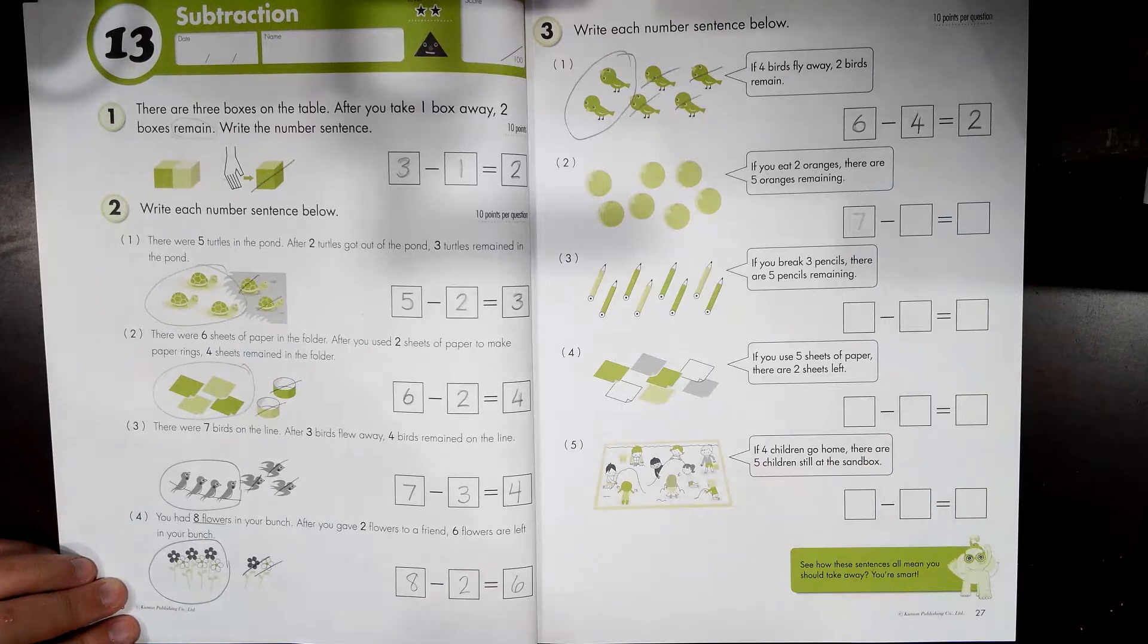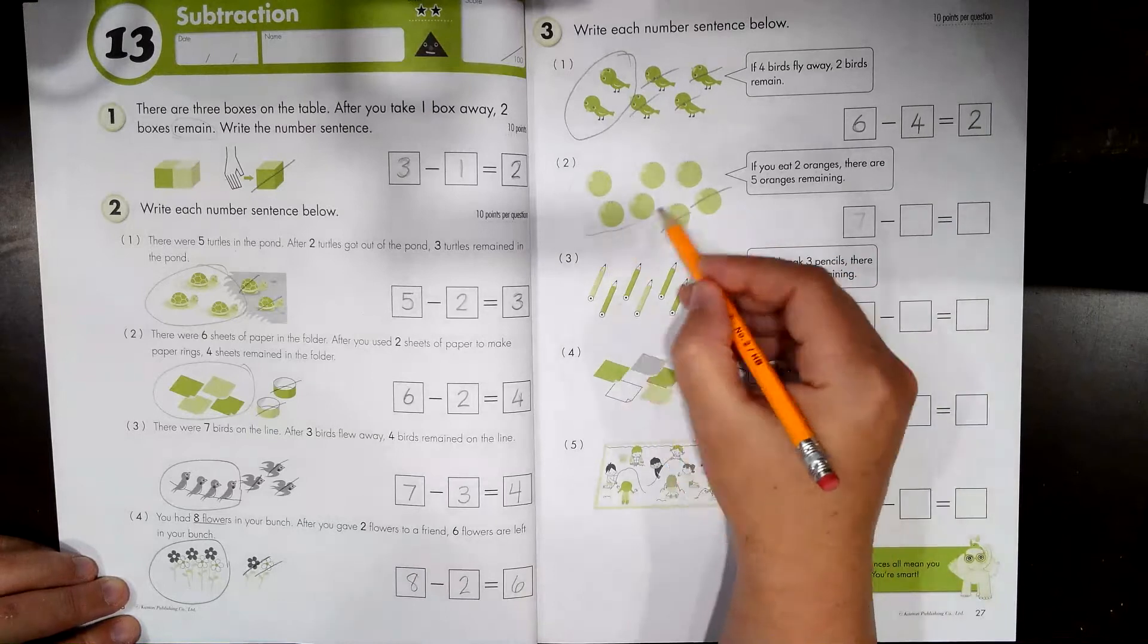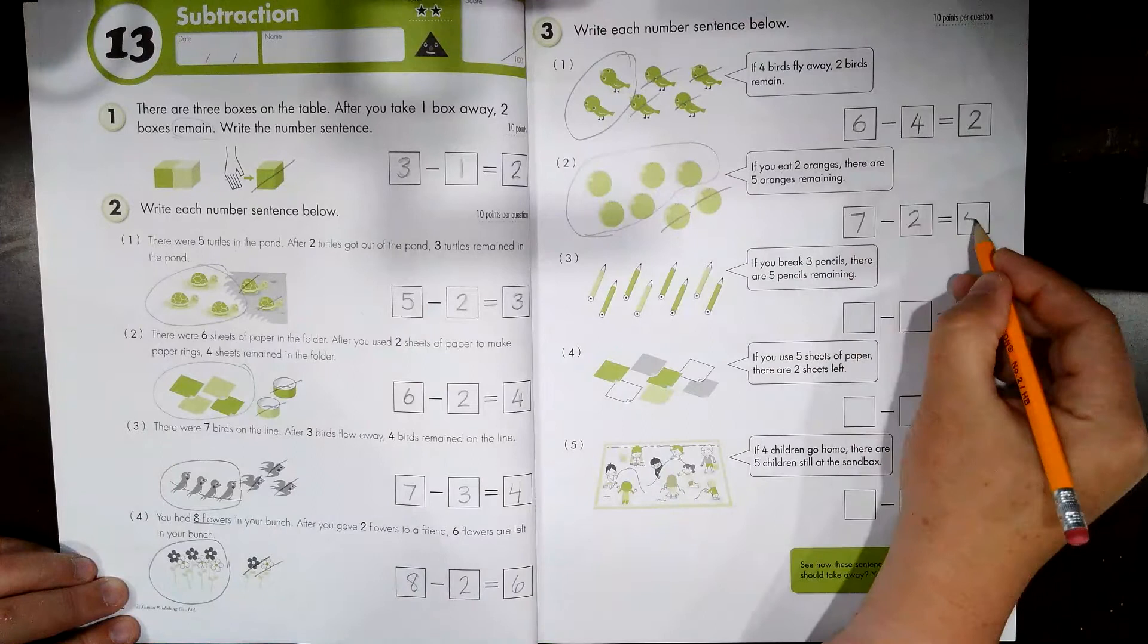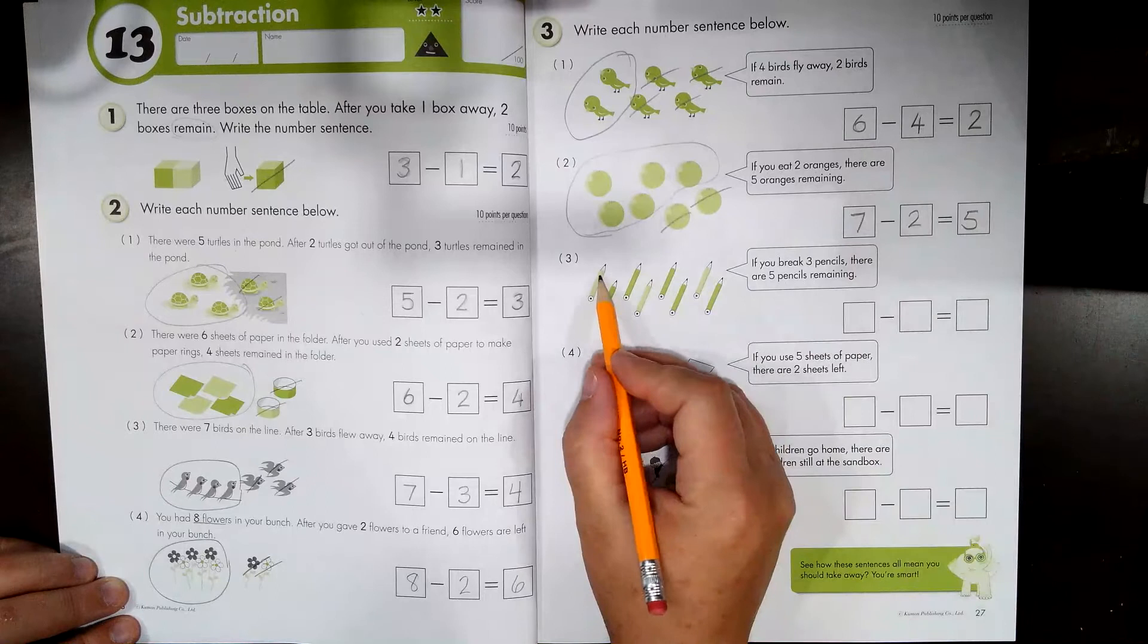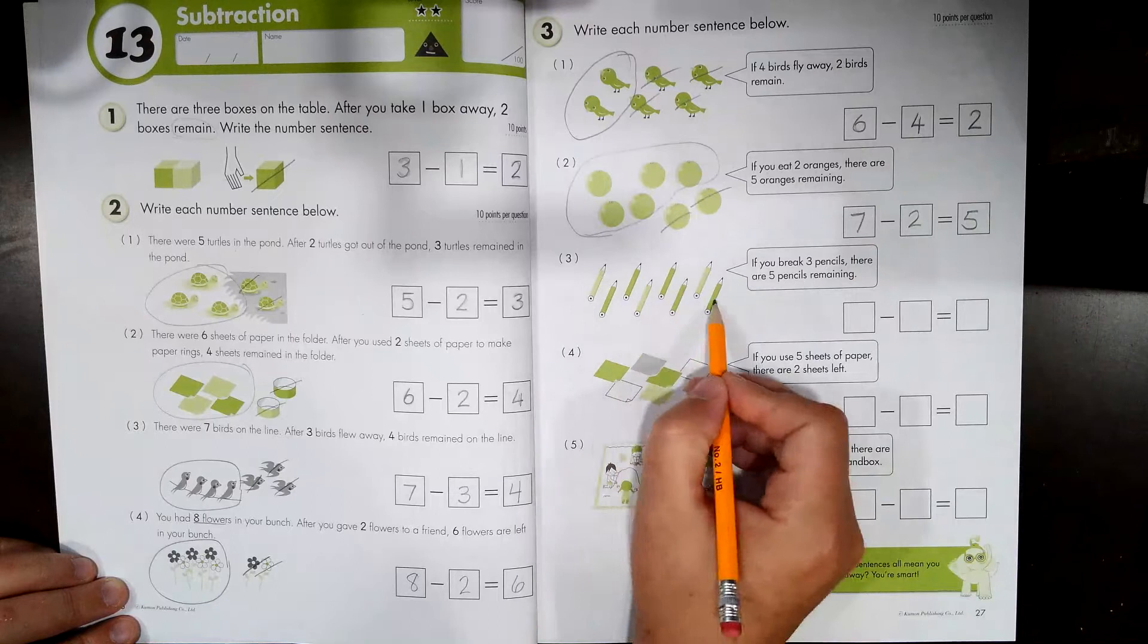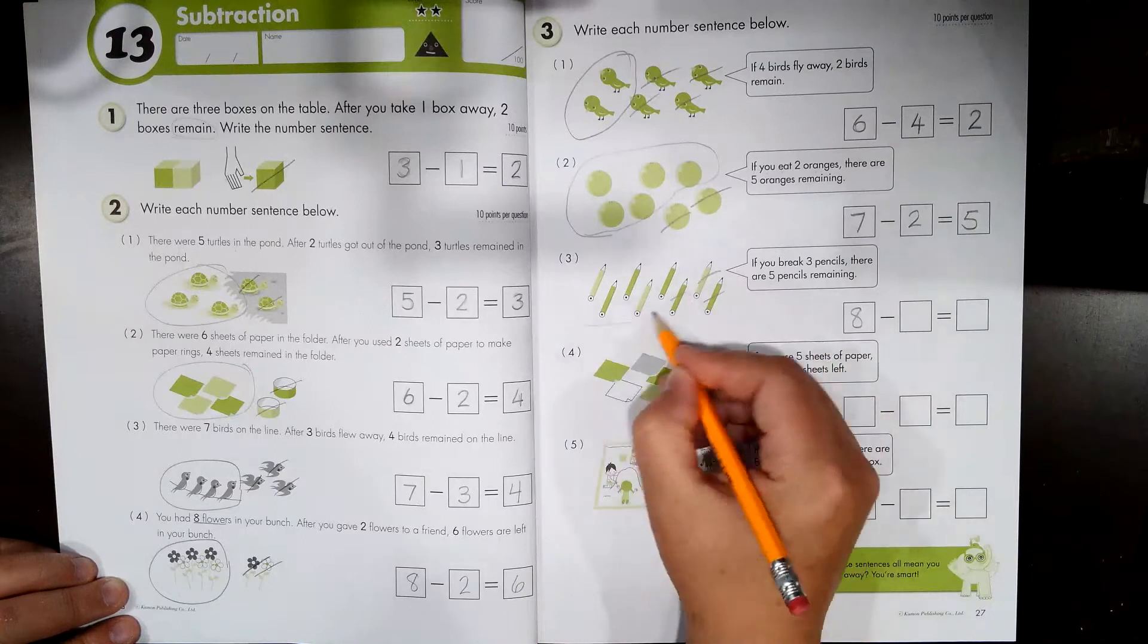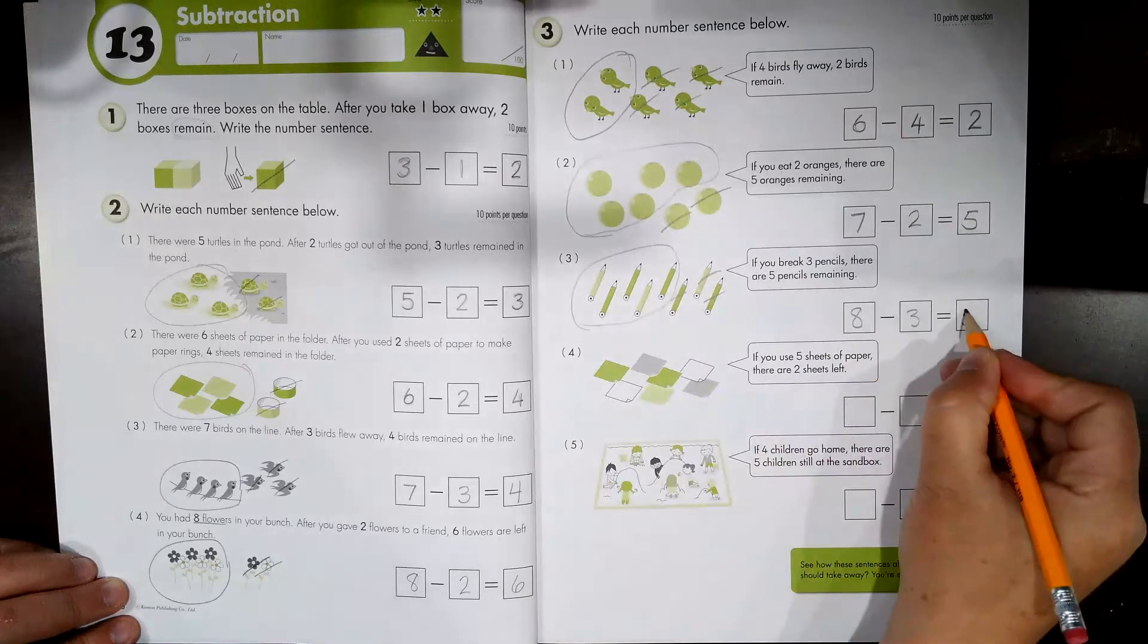If you eat two oranges, there are five remaining. So that means you started with seven, and you ate two, and there are five left. So you need to know how many there are to start. One, two, three, four, five, six, seven, eight to start. If you break three pencils, there are five remaining. Eight minus three equals five. That's your number sentence.